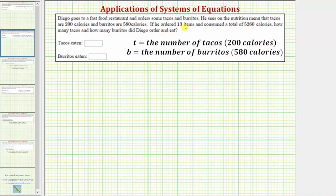To begin, we know he ordered 13 items and therefore t plus b, the number of tacos plus the number of burritos, must equal 13.